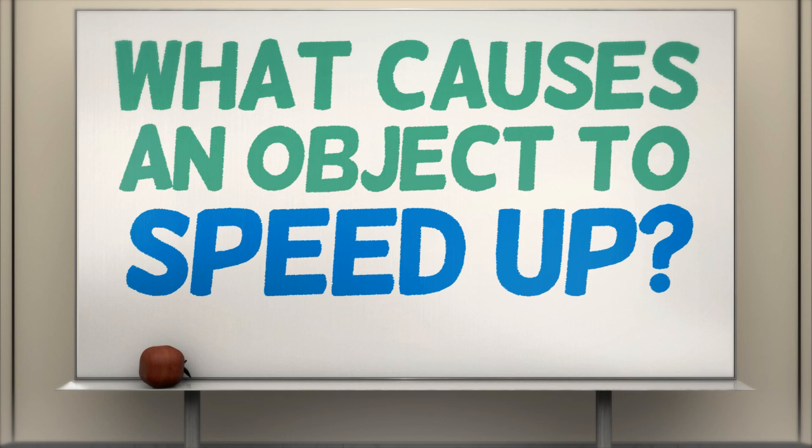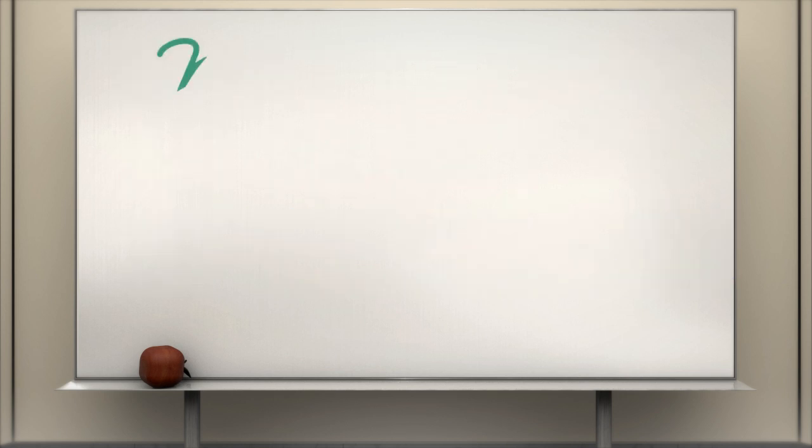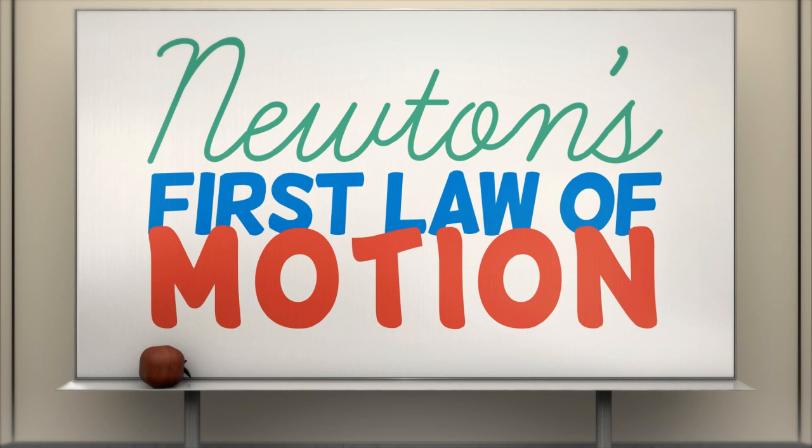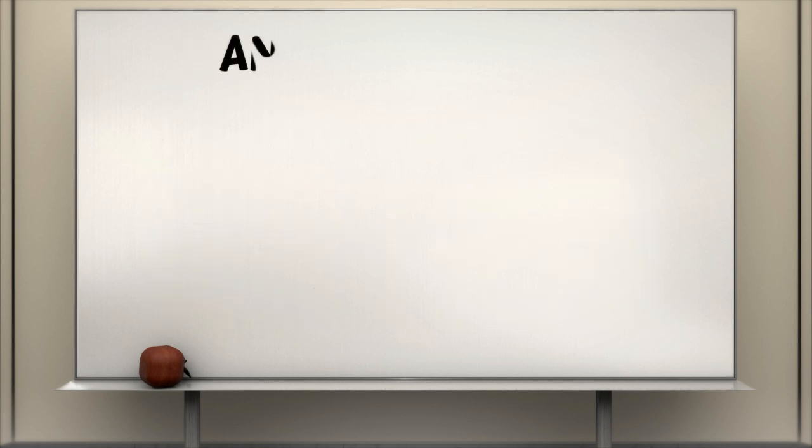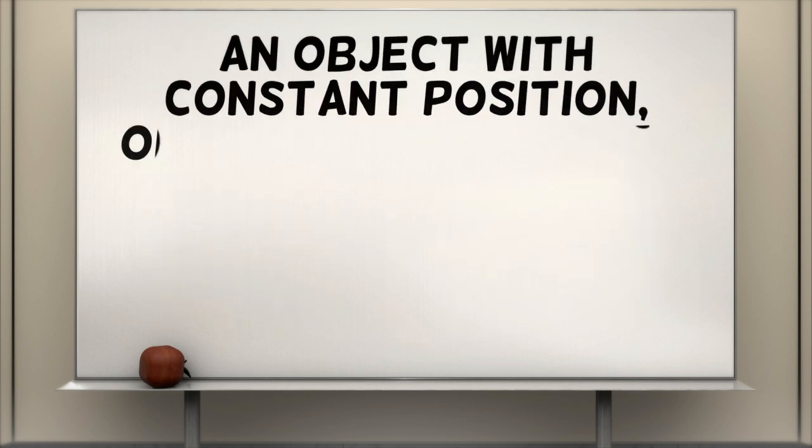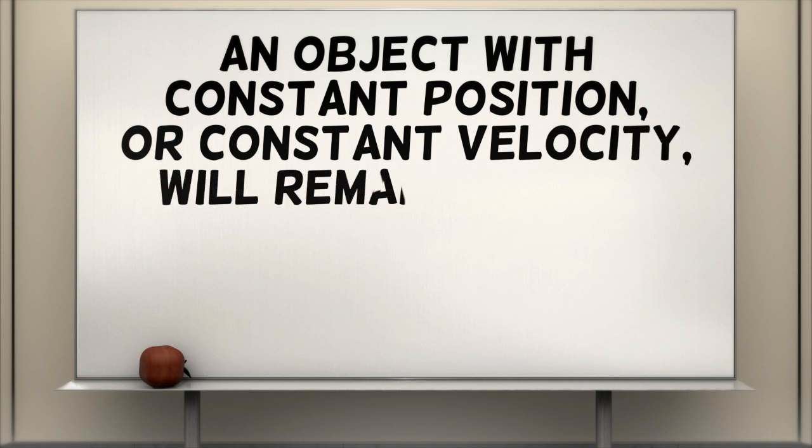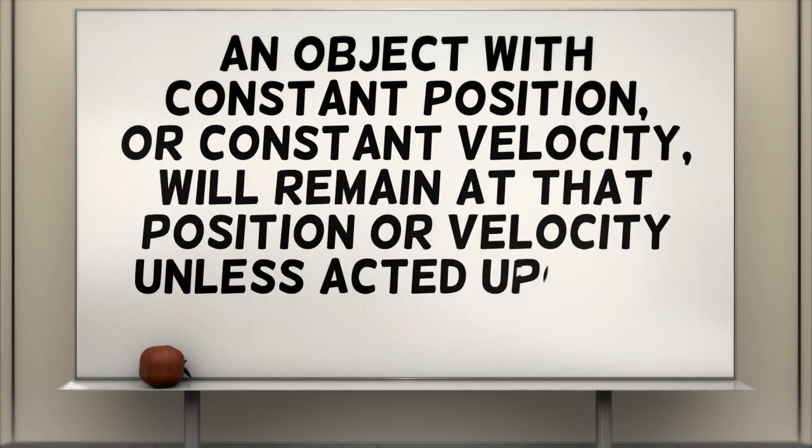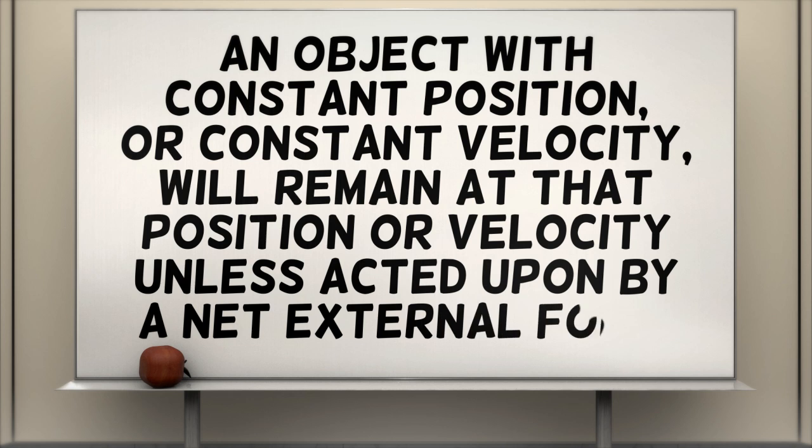At the start of the video, we asked the question, what causes an object to speed up? Newton answers this question in his first law of motion. An object with constant position or constant velocity will remain at that position or velocity, unless acted upon by a net external force.